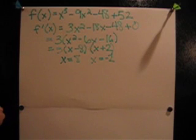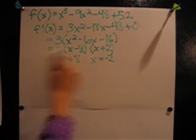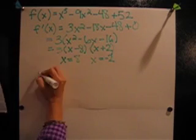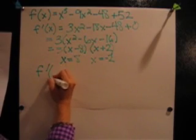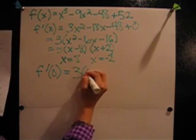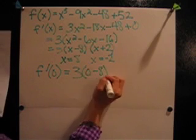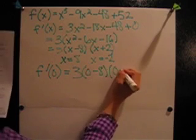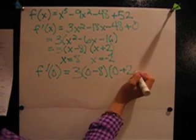We want to know if the function is increasing or decreasing at 0 and it is easier to use the factored equation to determine this. We will then do f prime of 0 equals 3 parentheses 0 minus 8, close parentheses, parentheses 0 plus 2.